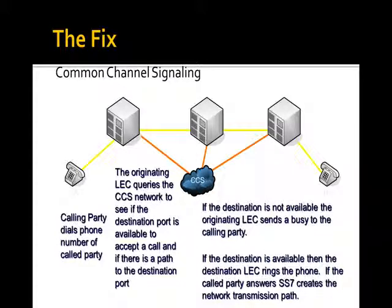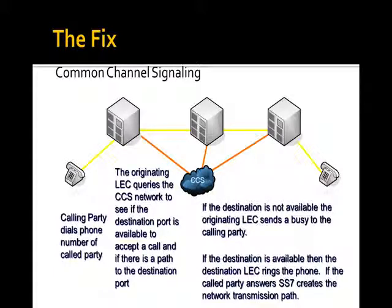The common channel signaling network went through several variations. The current version of it is called Signaling System 7 — those clever engineers and their inventive names. SS7 is alive and well; it's still around, and the signaling protocol on it is something called Q931. Extremely capable, very cryptic — if you look through it, unless you've had training, it's kind of hard to tell what's going on, but it does a lot.